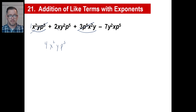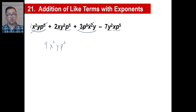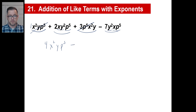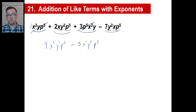Now let's check the remaining terms: x, y squared, p to the fifth — is there a matching term? Yes — x, y squared, p to the fifth — those two are like terms: 2 of something minus 7 gives negative 5 of something, so negative 5x y squared p to the fifth. Notice the first group and second group are not the same — the x exponent is 1 in one and 2 in the other — so don't try to combine them.